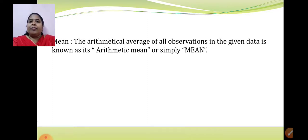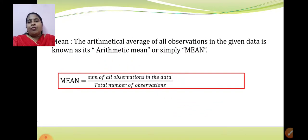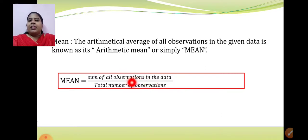Now let us see the definition of mean. The arithmetical average of all observations in the given data is known as arithmetical mean, or simply mean. The formula for mean is: sum of all observations in the data upon total number of observations — same as the average formula. This applies when observations are ungrouped. When observations are grouped, we will learn a new method. For now, when observations are ungrouped, use this formula: sum of all observations in the data upon total number of observations.